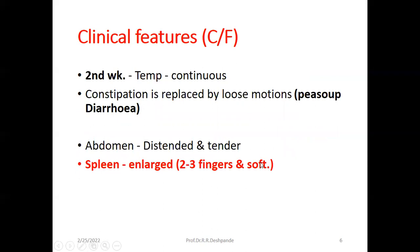Now, the second week. Typhoid fever will continue. In the second week, constipation is replaced by loose motions. The patient may get loose motions called pea soup diarrhea — don't forget this typical term. Pea soup diarrhea is a speciality of the second week of typhoid fever. The abdomen is distended and tender — the patient gets pain when the doctor palpates the abdomen. The spleen is enlarged 2 to 3 fingers, still soft, as in the first week.